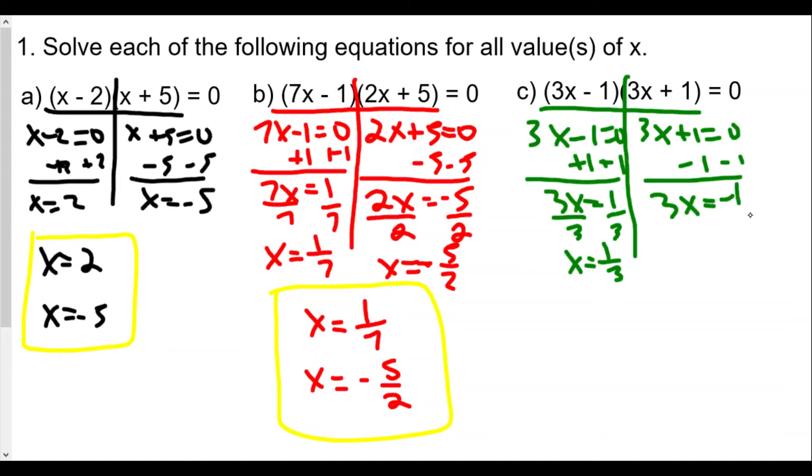Subtract 1, 3x equals negative 1, divide both sides by 3. x equals negative 1 over 3. Which means our solutions for the third one are x equals 1 third and x equals negative 1 third. Either one of these answers used for x will definitely set the equation equal to zero.